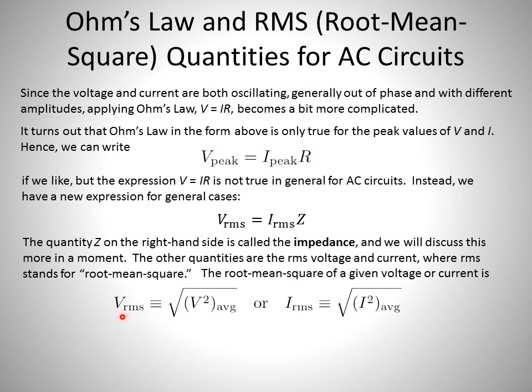The V RMS, or the root mean square of the voltage, is defined as the square root of the average of the square of the value of voltage, or the current is equal to the square root of the average of the square of the current.